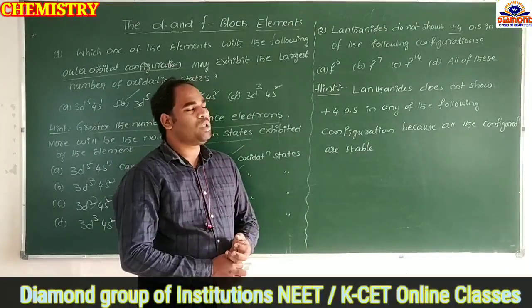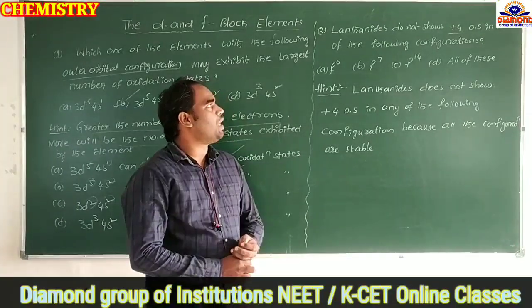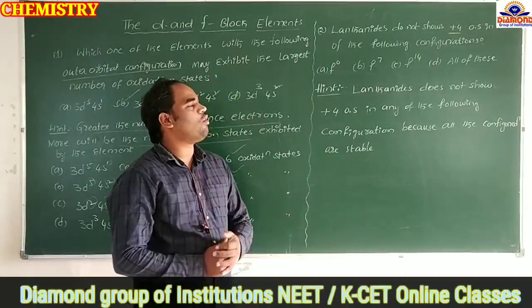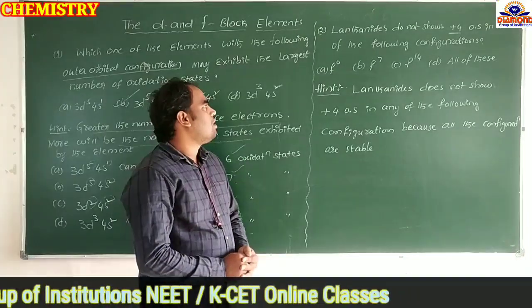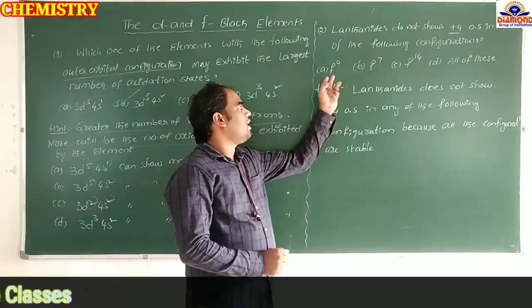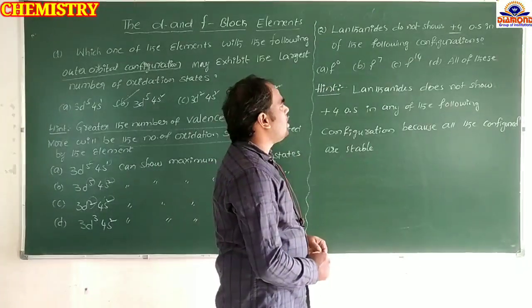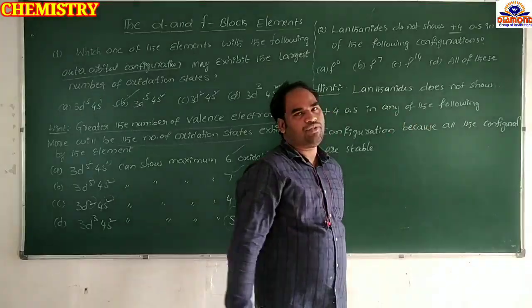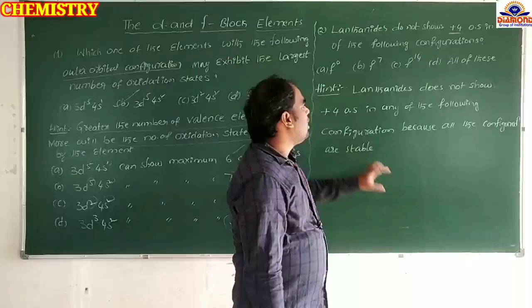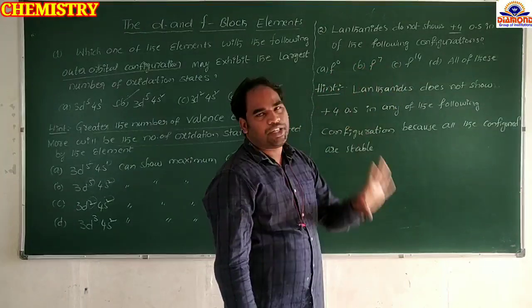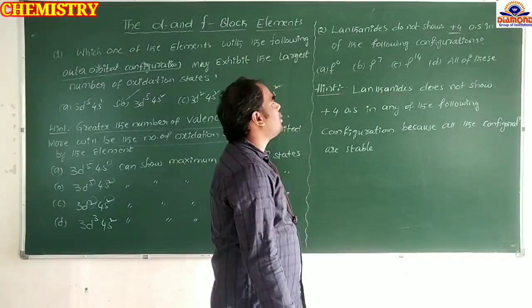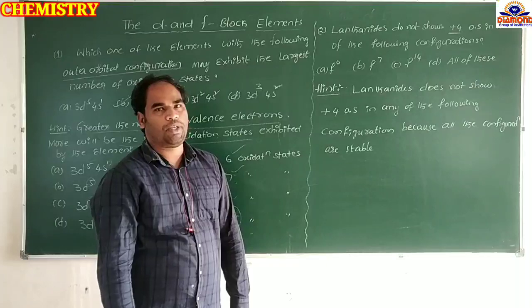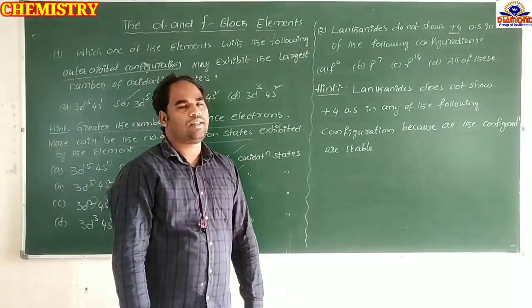In lanthanides, the differentiating electron enters the 4f orbital. We know that fully-filled and half-filled orbitals are stable electronic configurations. The f orbital can hold a maximum of 14 electrons (fully-filled = f¹⁴), and half-filled is 14÷2 = 7 (f⁷). The empty configuration f⁰ is also stable.